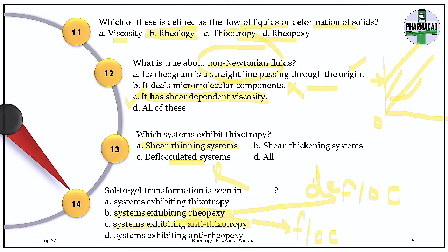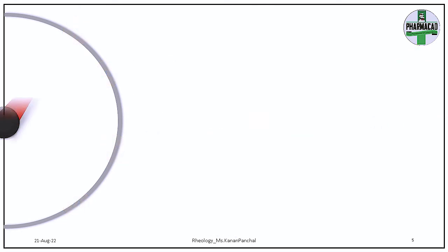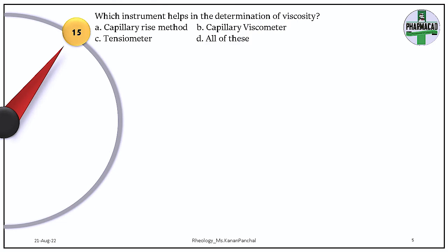Question 15. Which instrument helps in determination of viscosity? The answer is capillary viscometer — a capillary viscometer or Oswald viscometer helps in determination of viscosity. A tensiometer measures interfacial tension, and the capillary rise method measures surface tension.